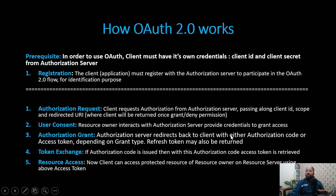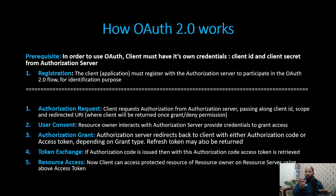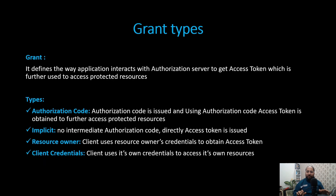It all depends which type of grant type we are using. If an authorization code is issued, then we will hit the token endpoint with this authorization code to get the access token. Now the access token is issued, and we can use it to access the protected resources. This is how OAuth 2.0 works in a generic way.